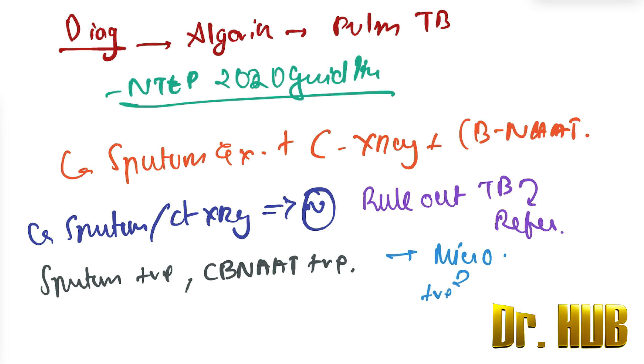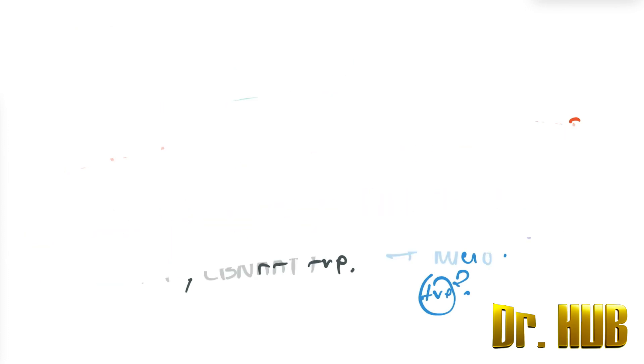Let's look at the protocol. First is the CB-NAT. After the CB-NAT, when the MTB is detected... First, let's see in case it is not detected.